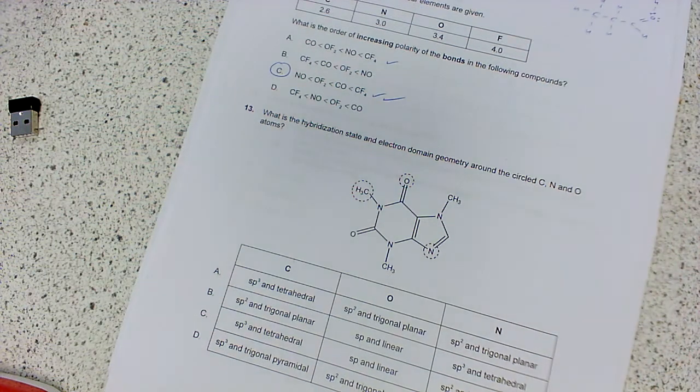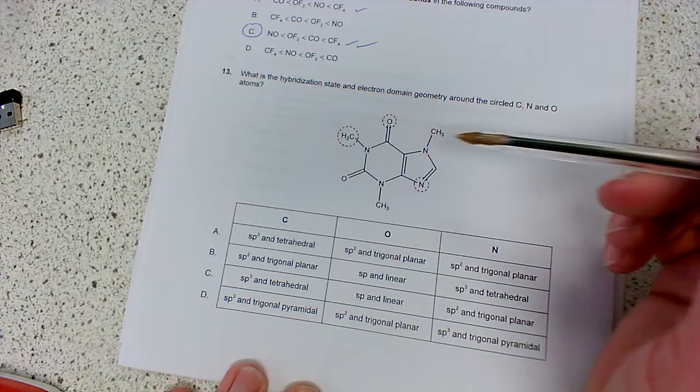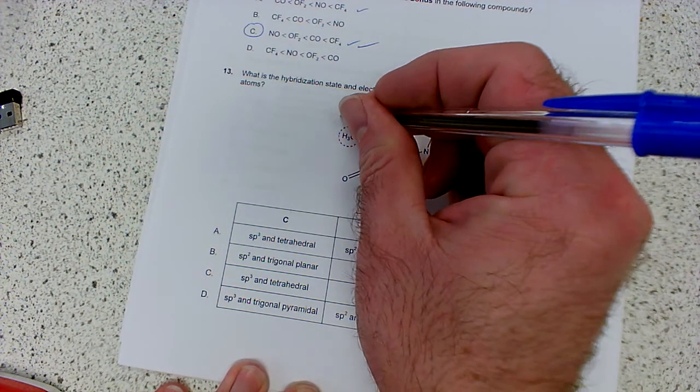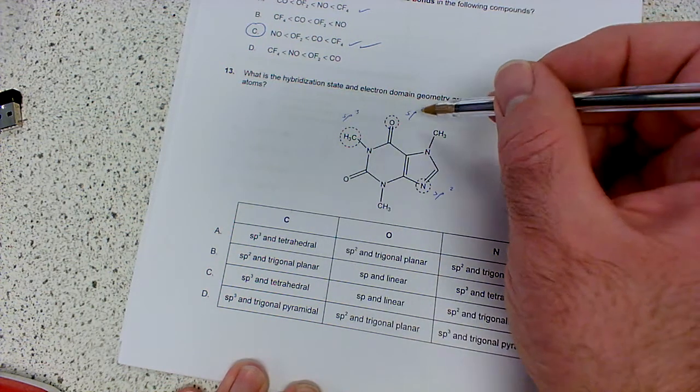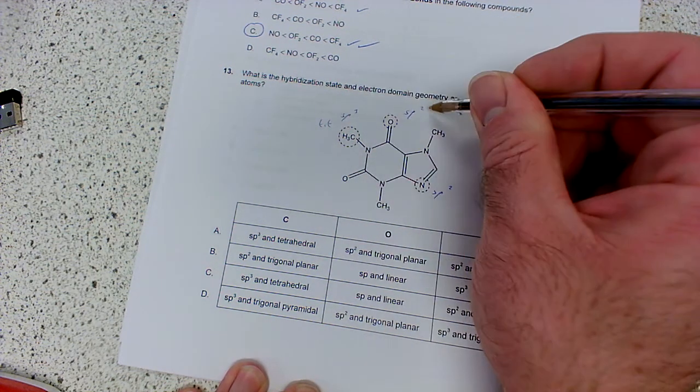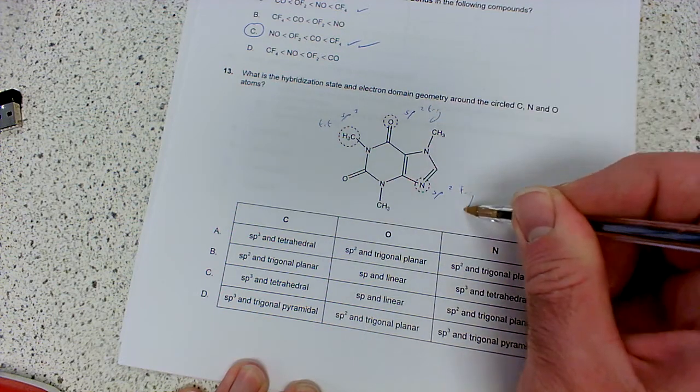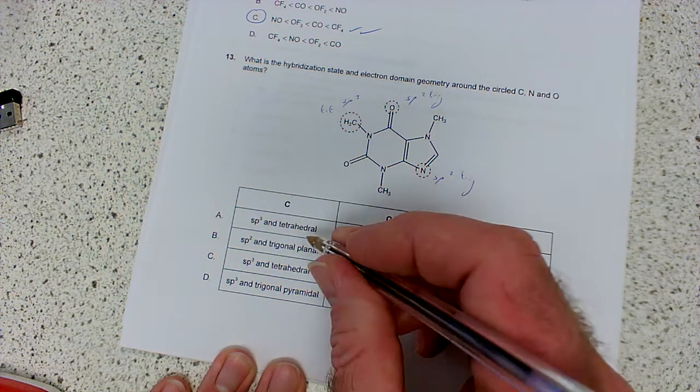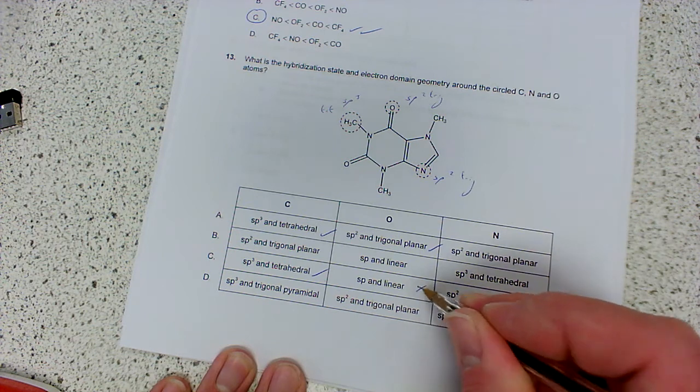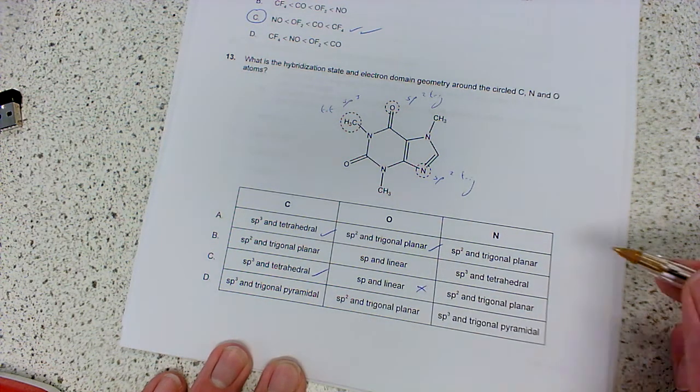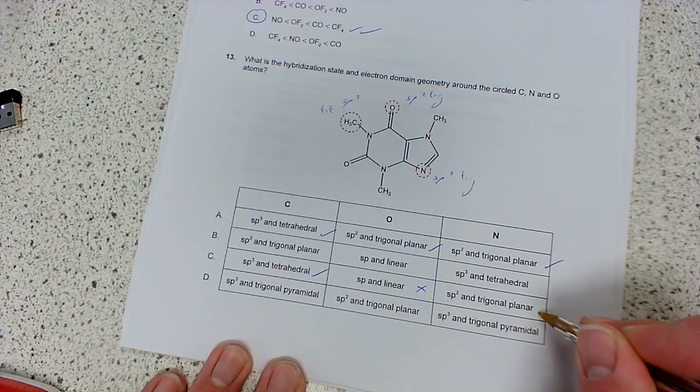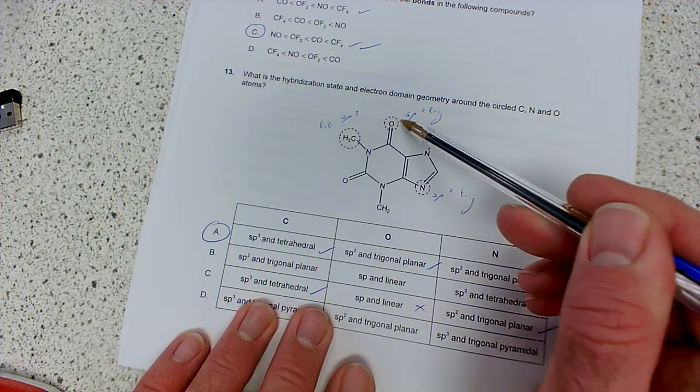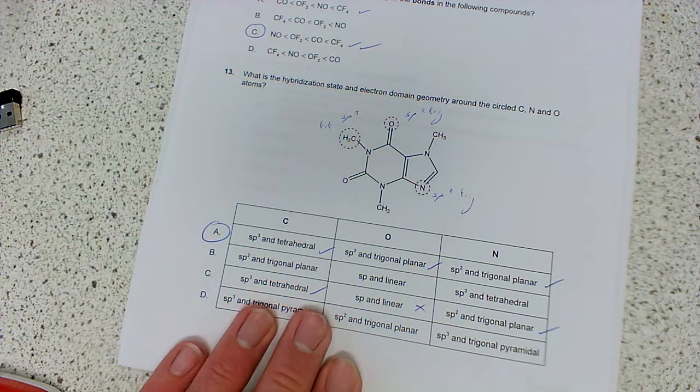Number 13: what is the hybridization state and electron domain geometry around the circled carbon and nitrogen? Whenever you see double bonds, just think sp2. sp2, sp2, single bond sp3. The associated shapes: with sp3 is tetrahedral, with sp2 it'll be trigonal planar. So sp3 and tetrahedral, sp2 and trigonal planar - that's right. A is the only right answer. Bond angles would be 109.5 and 120.